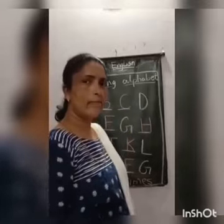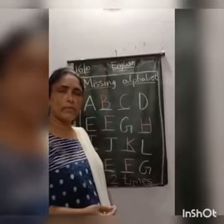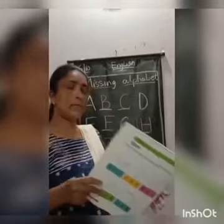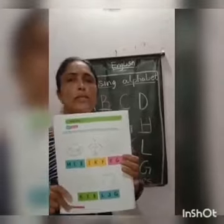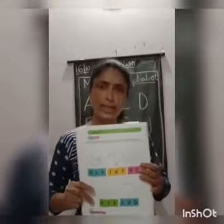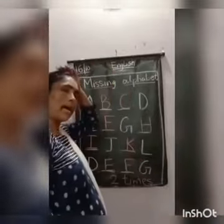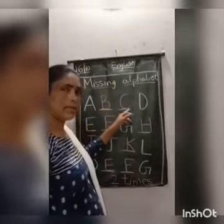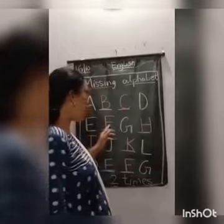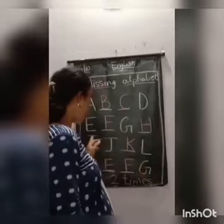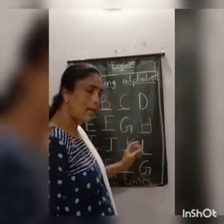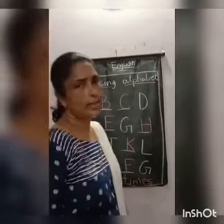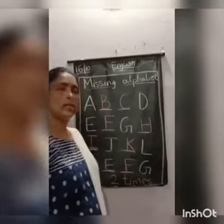This is your missing alphabets homework. I have given you page number 14 — that is one time. And this is now two times: missing alphabets A, B, C, D, E, F, G, H, I, J, K, L. And this is D, E, F, G. Yes, you have to copy it fast.